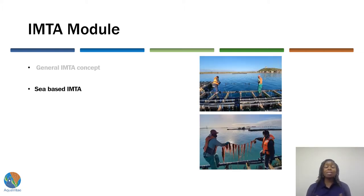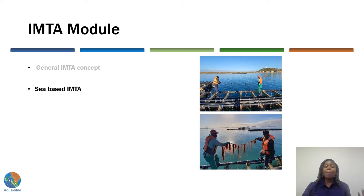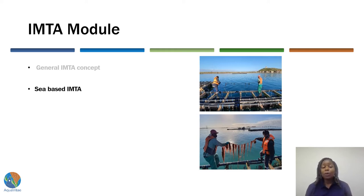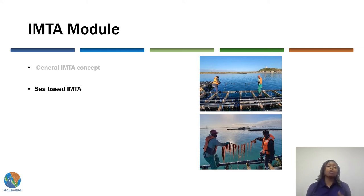The second topic is sea-based IMTA, where an IMTA system is run in the sea, usually in cages as shown in the picture at the top. These pictures are from an IMTA project currently taking place in Saldana Bay in the Western Cape of South Africa, where mussels are grown on rafts together with a macroalgae, Gracilaria, which can be used in feed for aquaculture species — nutrients are recycled that way. Under this topic we will give case studies of sea-based IMTA systems operating in South Africa and France, discussing their benefits, challenges, and prospects.